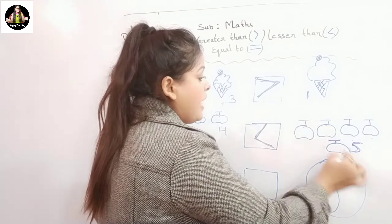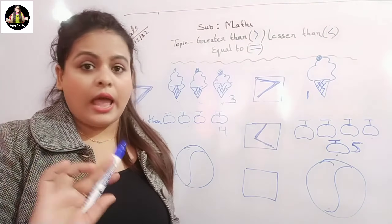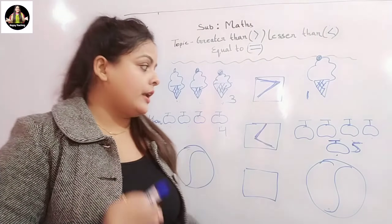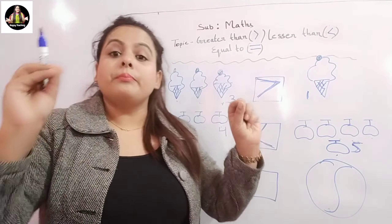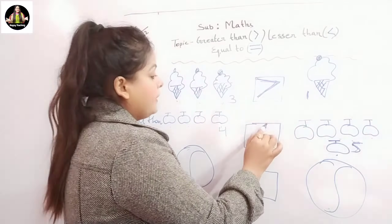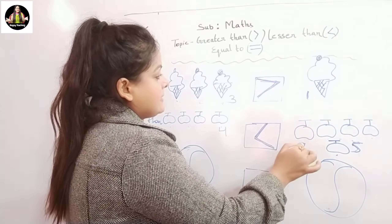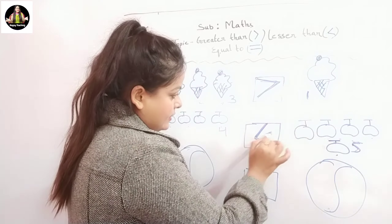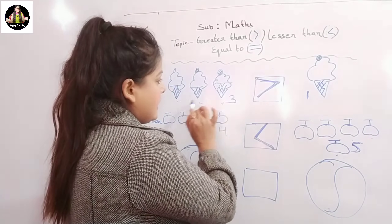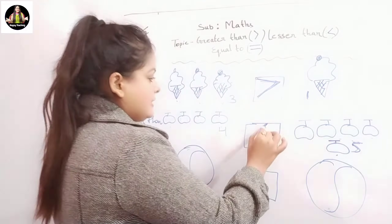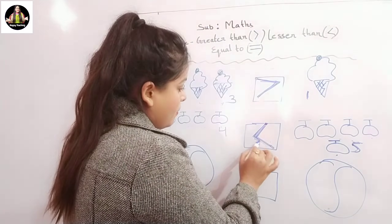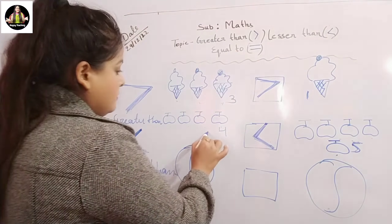Because five apples are here. The alligator never eats small numbers — usa thode se kuch nahi hota — he always wants to have the bigger one, the greater one. So the alligator will open his mouth towards this side. The back of his mouth points towards the small number.